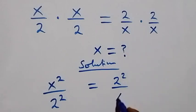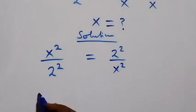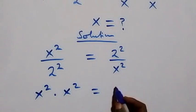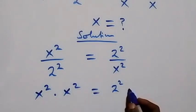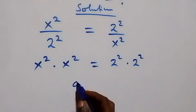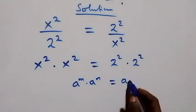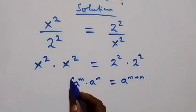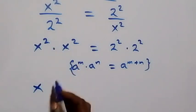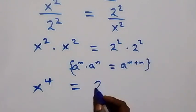From here we can cross multiply, giving us x squared times x squared equals two squared times two squared. This follows from the law of indices: a raised to power m times a raised to power n equals a raised to power m plus n. So we have x raised to power 4 equals two raised to power 4.